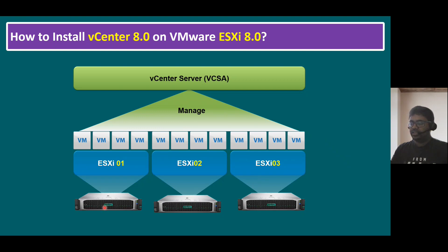ESXi is a hypervisor — we can run a hypervisor operating system on any hardware. In this diagram, we have three HP servers running three ESXi hosts: ESXi 1, 2, and 3. On top of the hypervisor, it allows you to create multiple virtual machines. A virtual machine is a software-generated machine that looks like a physical machine. To manage all our ESXi hosts and virtual machines, we use the tool called vCenter Server, or vCenter for short.